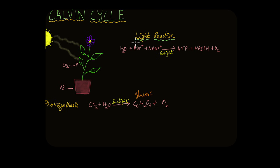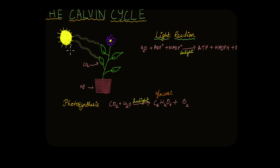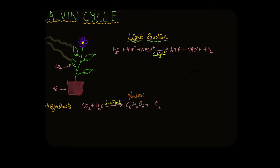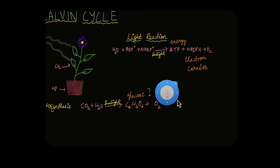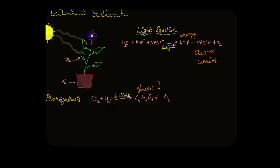But if you take a look at the light reaction — what actually takes place when plants are absorbing sunlight — it involves water, ADP+, and NADP+ in the presence of sunlight to yield ATP, NADPH, and oxygen. ATP is the energy currency; this is what gives the plant energy. NADPH is an electron carrier. Oxygen is the by-product. But where in this reaction is glucose? There is no glucose here — only energy and NADPH are produced.